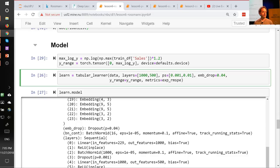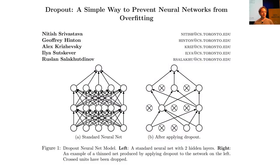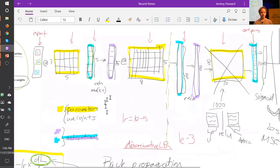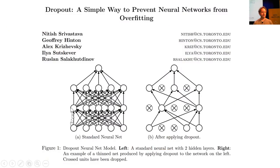Let's learn about dropout. Dropout is a kind of regularization — this is the dropout paper, which was Srivastava's master's thesis under Jeffrey Hinton. This picture from the original paper shows a standard fully connected network on the left. Each line shows a multiplication of an activation times a weight, and when multiple arrows come in, that represents a sum. So each activation is the sum of all inputs times all the weights connecting to it.